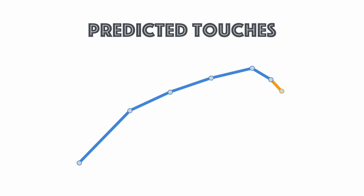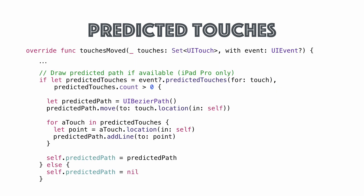The important thing with predicted touches is that you want to use them for display purposes only — display it on screen to make it look like you're keeping up with the pencil — but you don't want to add those touches to your drawing model because they are not real touches yet. In code, it looks very similar to coalesced touches: we have a predictedTouches method on the event, get an array back, and we create a separate Bézier path just for these predicted touches and draw that separately, not adding it to our array of UIBézierPaths.